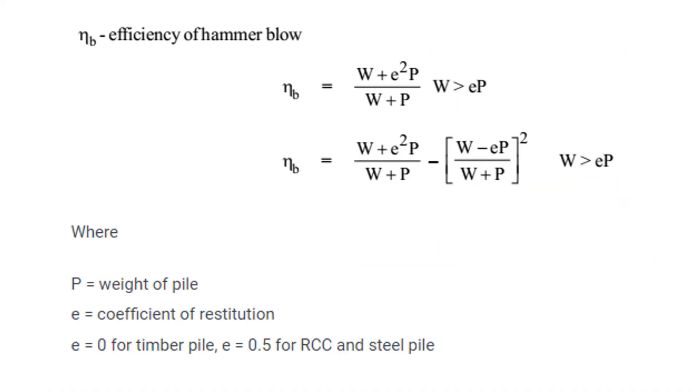Then, efficiency of hammer blow, eta_h, depends on the condition. If the weight of the hammer W is greater than e times P, we use this equation. This is the efficiency of blow.